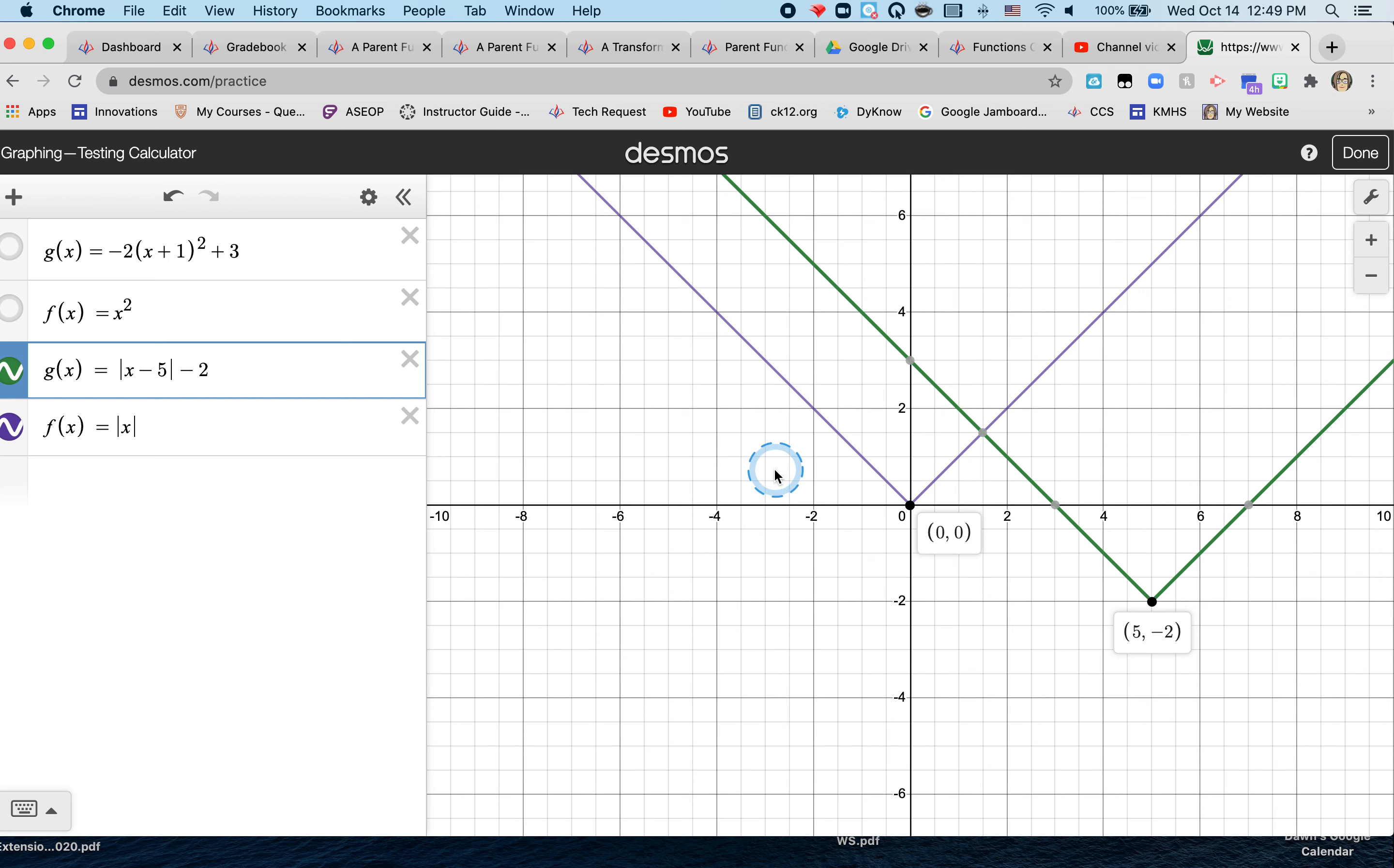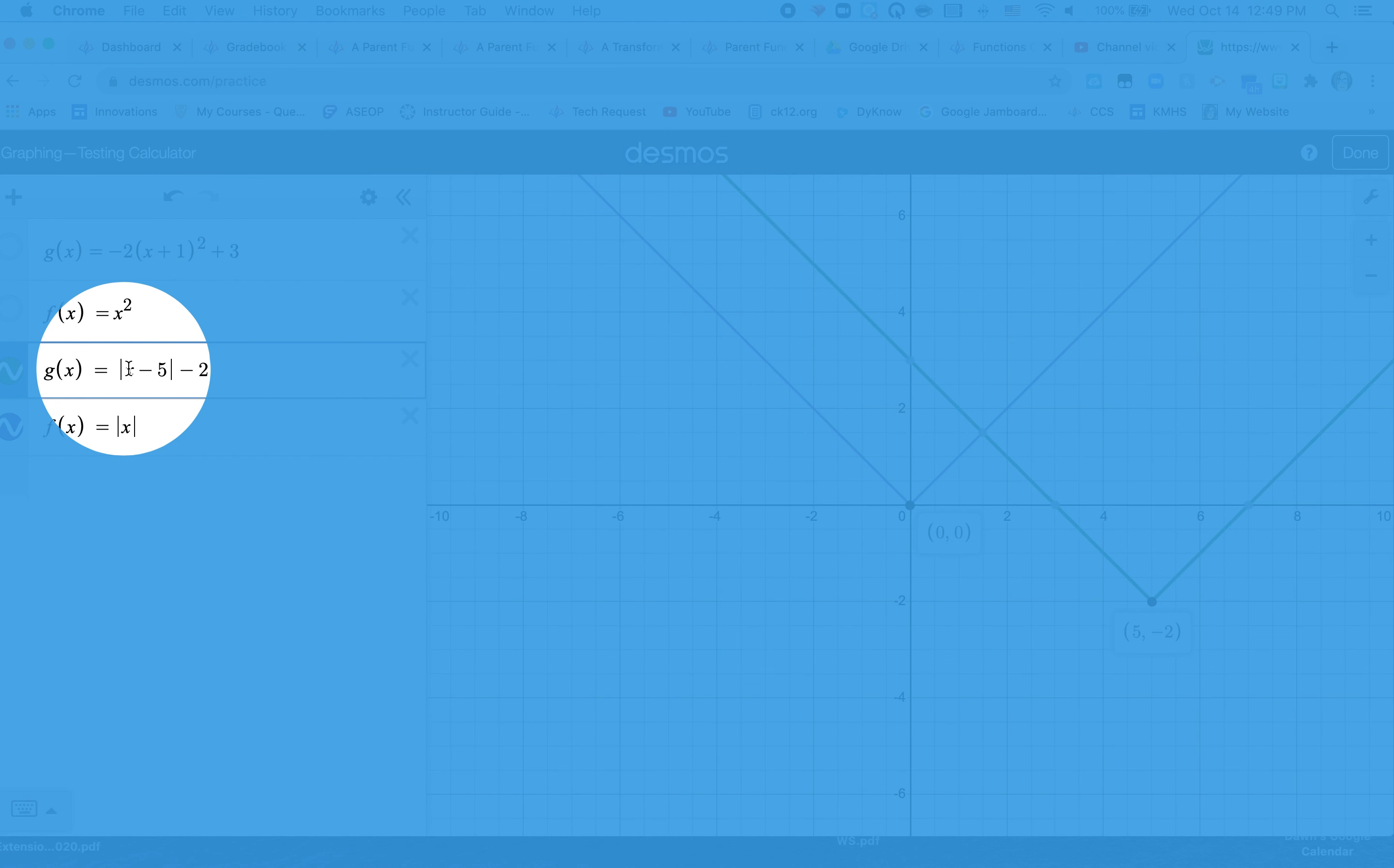The g(x), it's going to move to the right. How many places does it move to the right? It moves five to the right. Now again, you have to think, okay, you don't want to say plus five when you're talking about being inside the absolute value.